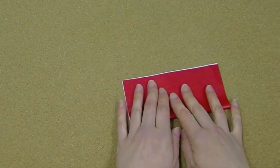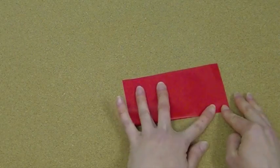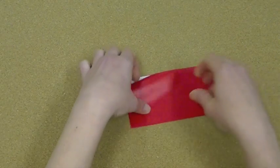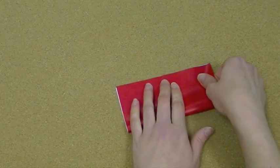We're just going to fold and make horizontal and vertical creases. So fold in half, open it up, turn it around a little and fold it in half again.